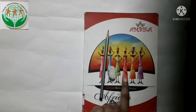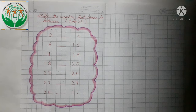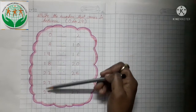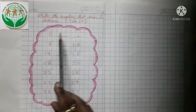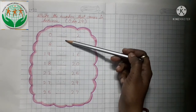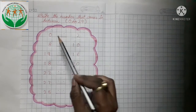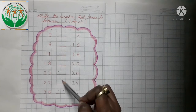So kids, for this, take out your math notebook, your pencil and your eraser, and open it. Maim will write some numbers here and some numbers there. Beech mein space chhoda hai, dot diya hai aapko. We will write the numbers that come in between — hum in numbers ke between wala number likhna hai.